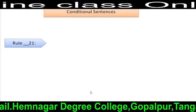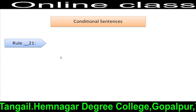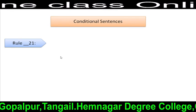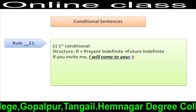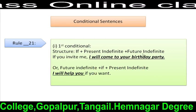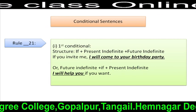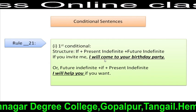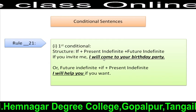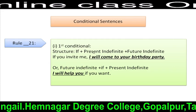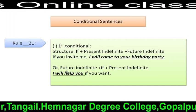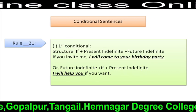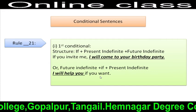Rule 21: Conditional sentences. There are three types of conditional sentences. First conditional structure: If + present tense + future tense. For example: 'If you invite me, I will come to your party.' This condition may also be reversed: Future tense + if + present tense. For example: 'I will help you if you want.'